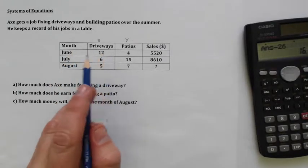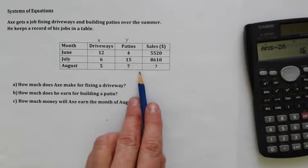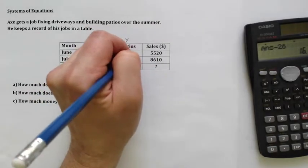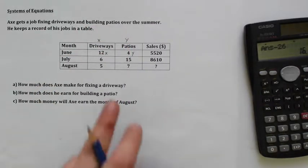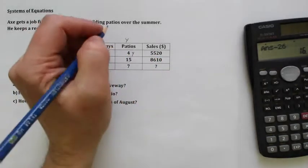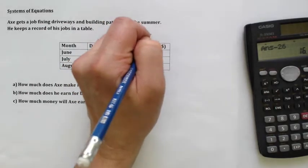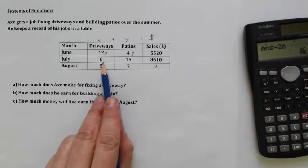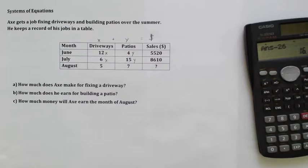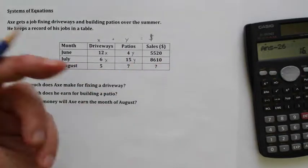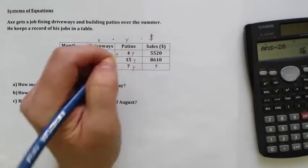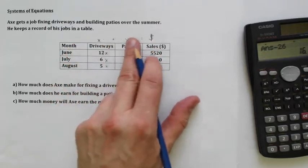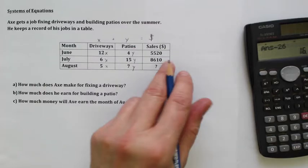And now what happens is you can kind of figure these X's flow through the table. So 12 times the unknown amount per driveway, 4 times the unknown amount for a patio comes to $5,520 if we add them together. So down here, 6X and 15Y will come to this amount. And then down here, we've got unknown. In order to get this amount, we need to know what the X and the Y are. So we can use this table. Whenever you see a table like this, we're going to set those up into equations right away.